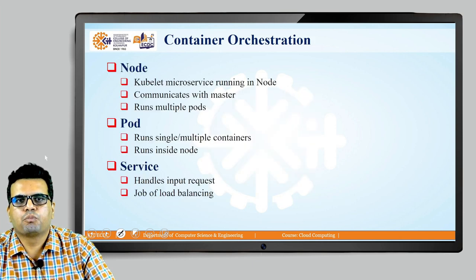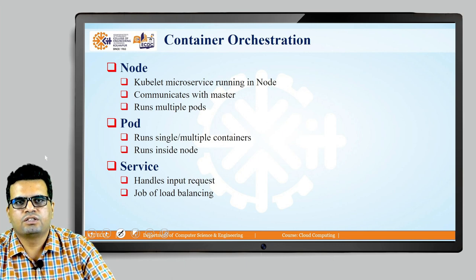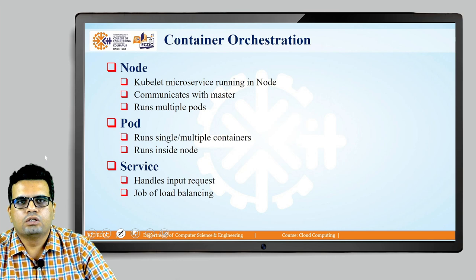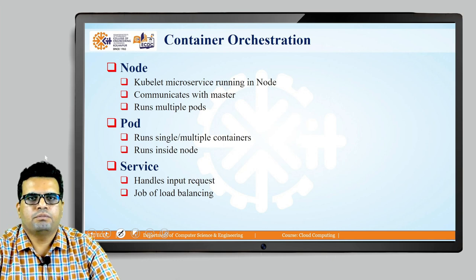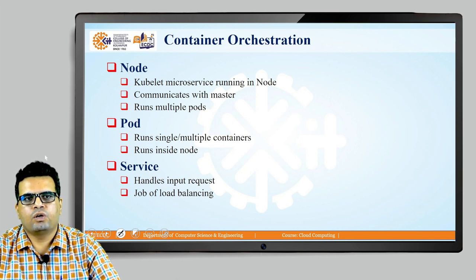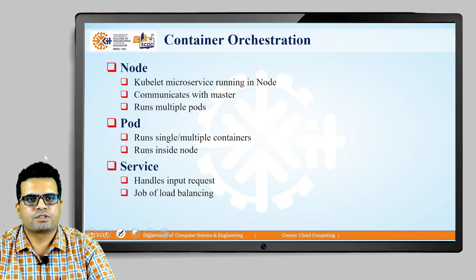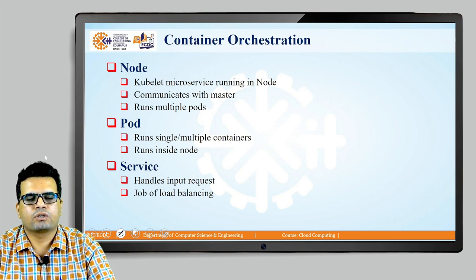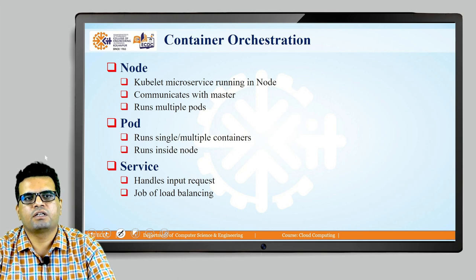These are the key components of Kubernetes: there is a node, there is a pod, and a service. A node may be a kubelet microservice. When we have a microservice running inside Kubernetes, we can call that particular node as a kubelet, and that kubelet is sometimes referred to as a microservice.